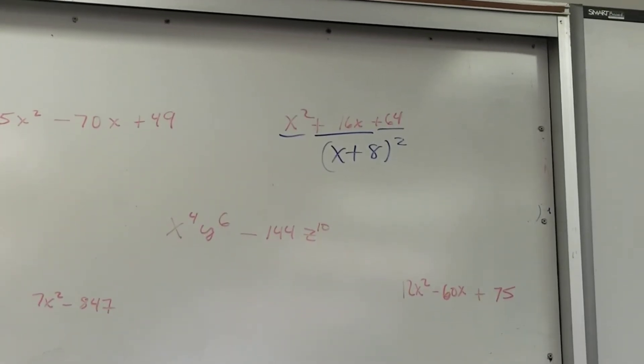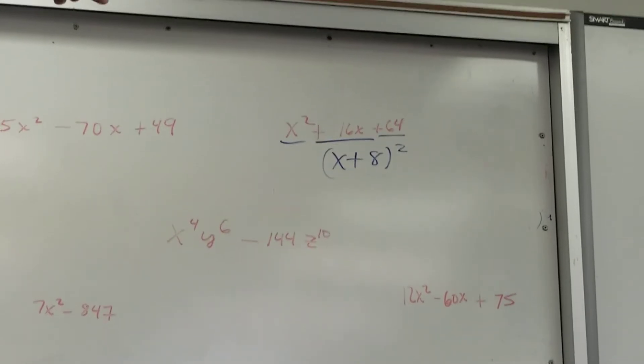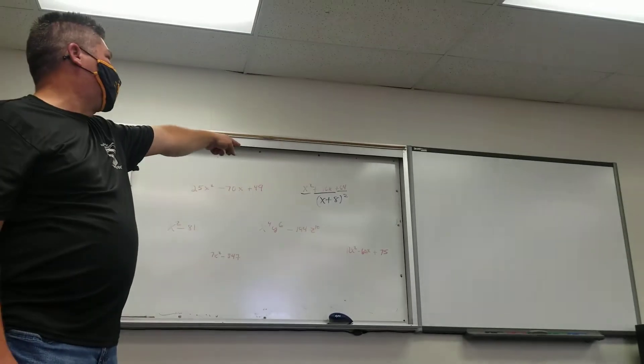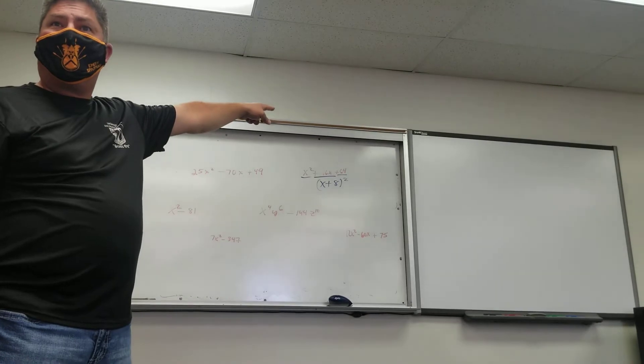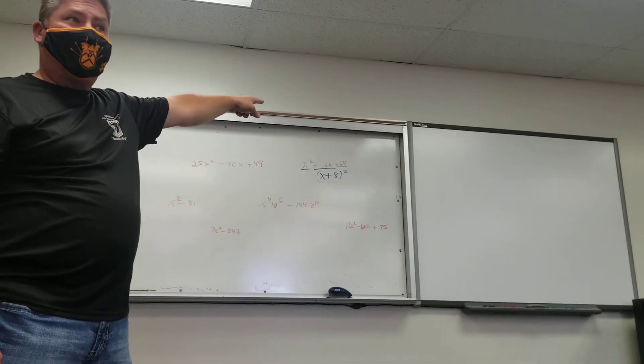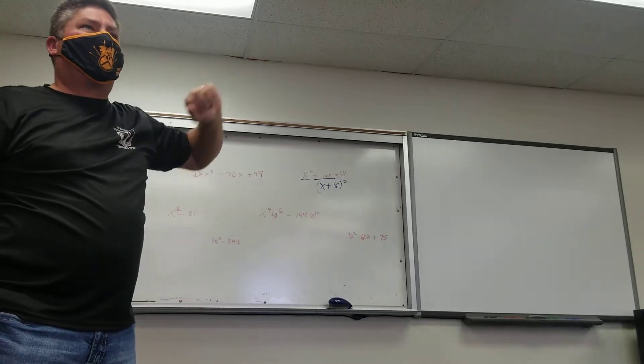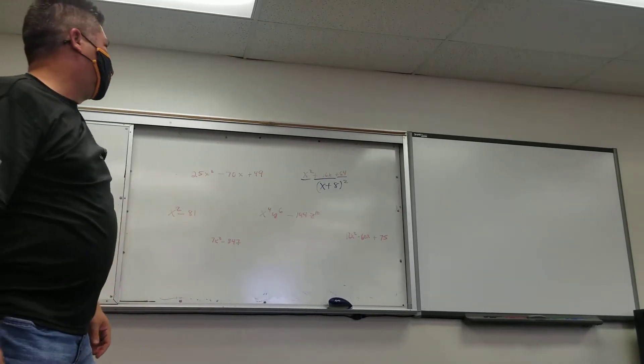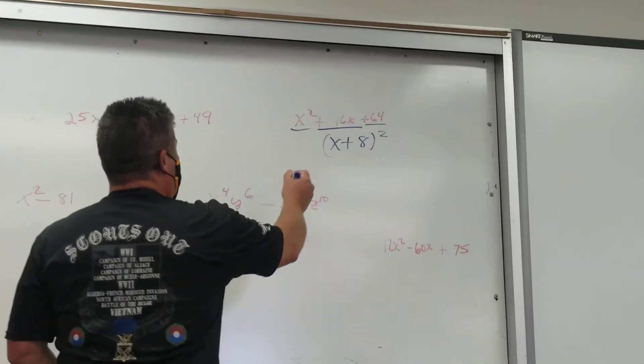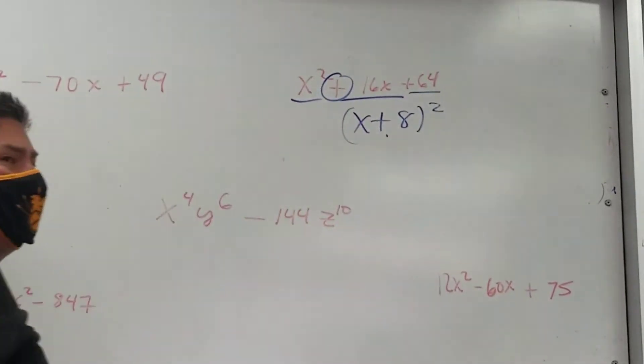What's the square root of x squared? X. Everybody got it? What's the square root of 64? 8. Product, 8x, doubled, is it the middle term? Yes. Then whatever the sign in the middle is, stays there. Very simple.